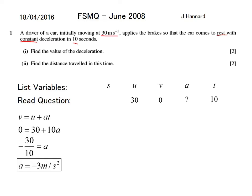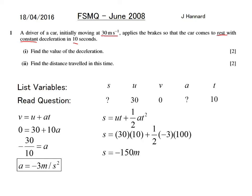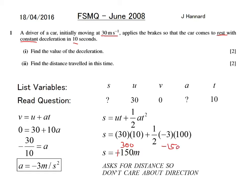Part 2: find the distance travelled in this time. Using s equals ut plus half at squared: s equals 30 times 10 plus half times minus 3 times 100, which gives 300 minus 150. The answer is positive 150 — distance doesn't care about direction — so the distance is 150 metres.